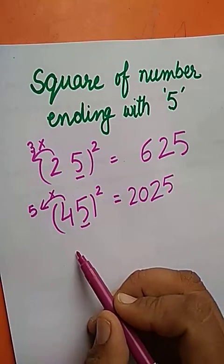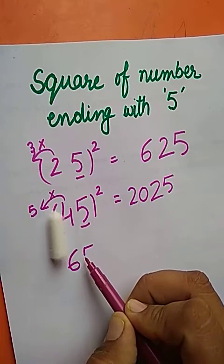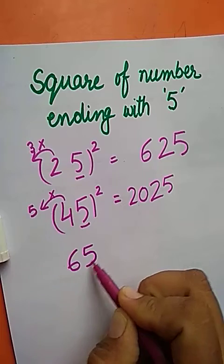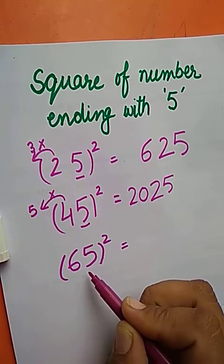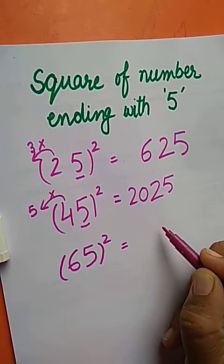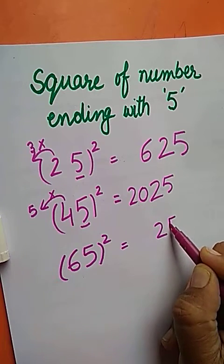Let us now find the square of number 65. The ending digit here is 5. 5 times 5 is 25.